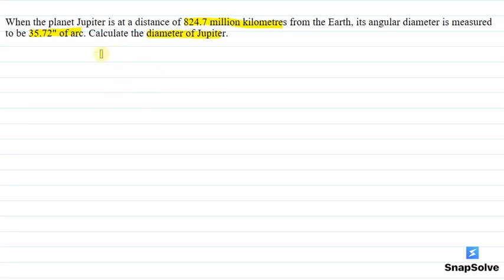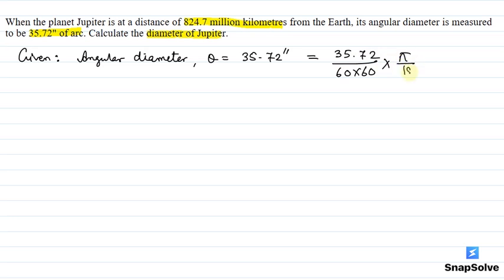So we have to solve this. What is given? The angular diameter theta is given as 35.72 arc seconds. We have to convert this value: 35.72 divided by 60 times 60 times pi by 180 radians. This is the theta value.